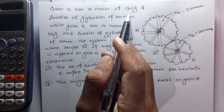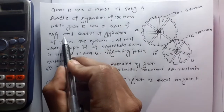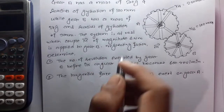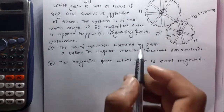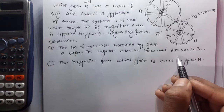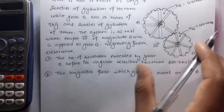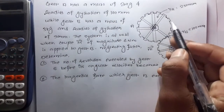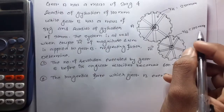Gear A has a mass of 20 kg and radius of gyration of 100 mm, while gear B has a mass of 3 kg and radius of gyration of 90 mm. The system is at rest when a couple M of magnitude 6 Nm is applied to gear B. Neglecting friction, determine the number of revolutions executed by gear B before its angular velocity becomes 600 RPM, and the tangential force which gear B exerts on gear A. The radius of gear A is 250 mm and the radius of gear B is 100 mm.